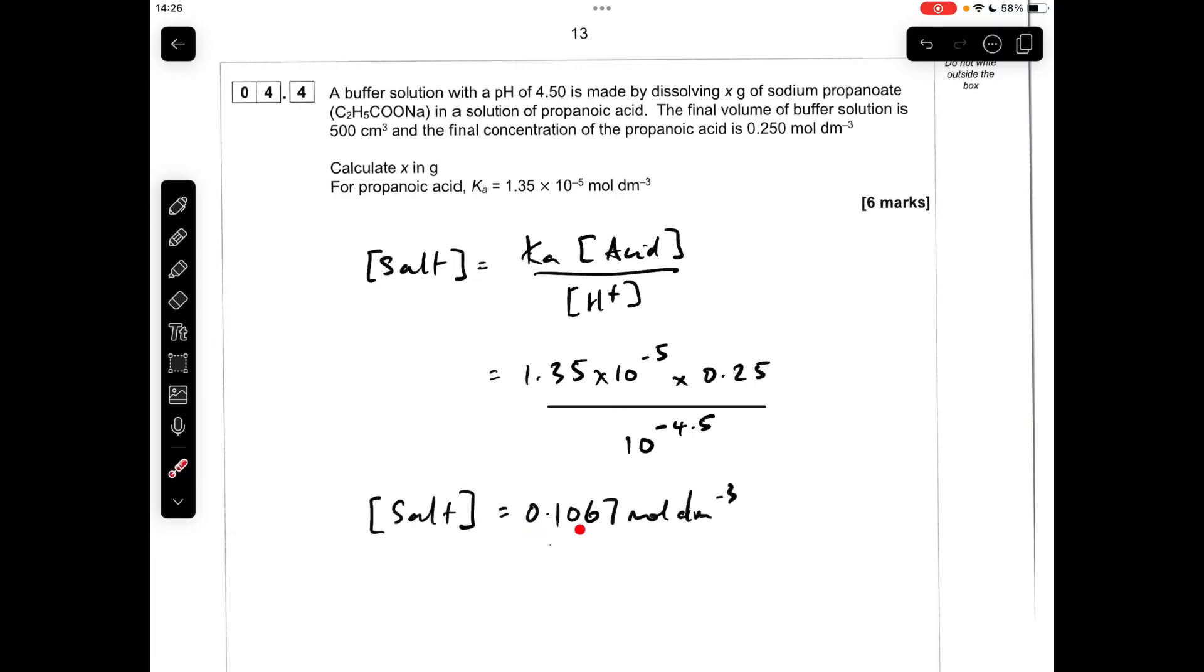The salt concentration comes out at 0.1067 moles per decimetre cubed. The moles of salt is the concentration times the volume, so that 500 cm³ volume, but I've put that into decimetres cubed. That gives that many moles.